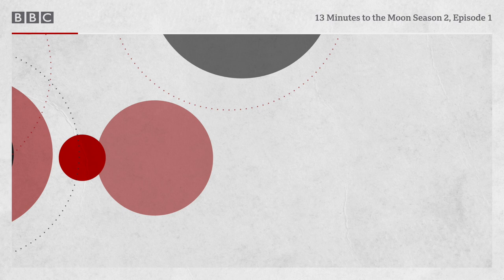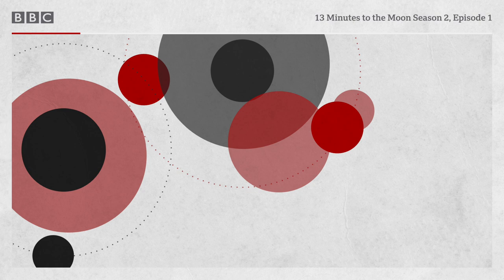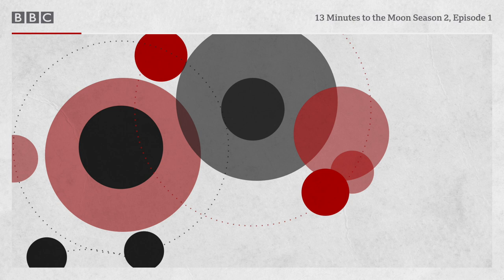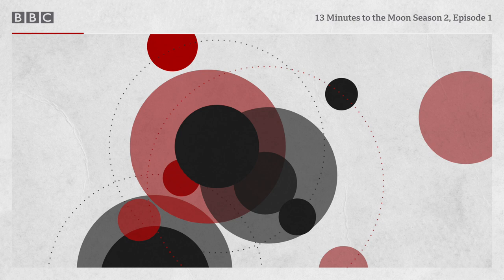Apollo 12 followed suit, executing its lunar landing with pinpoint accuracy. So by the time of Apollo 13, NASA appeared to have found its rhythm. A feat that had appeared impossible less than a year earlier now began to seem routine. But Apollo 13 was fatally flawed from the start. It would never land on the Moon. Instead, an explosion triggered a catastrophic cascade of events that threatened the spacecraft and the lives of the crew over and over again throughout their mission.